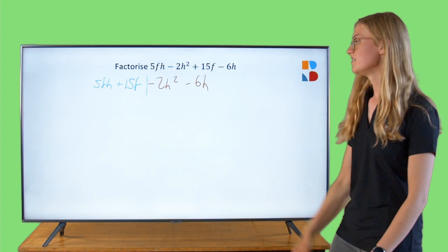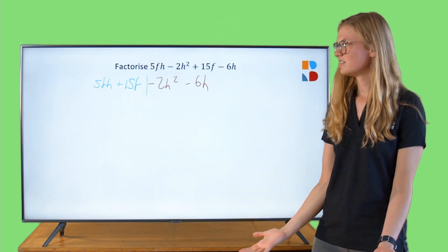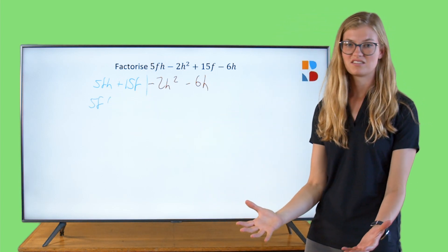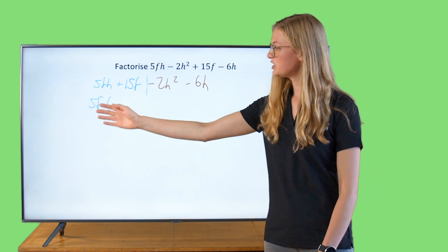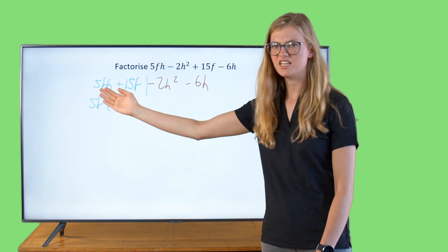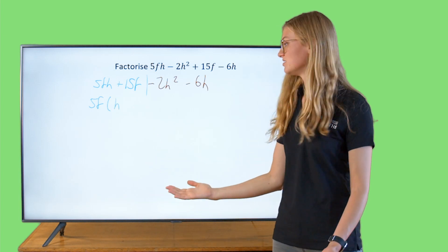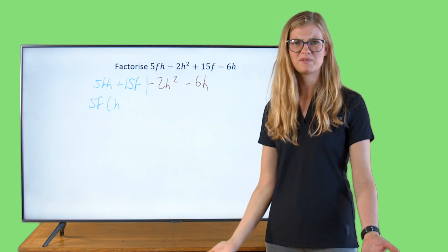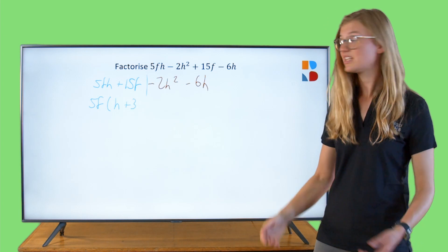First part, 5FH plus 15F. What's in common across there? 5F. Let's put that outside a bracket. If we took 5F out of 5FH, what's been left over? We've been left with a H. Plus 15F, if we've taken out 5F, what's been left over there? Plus 3. That's that side done.